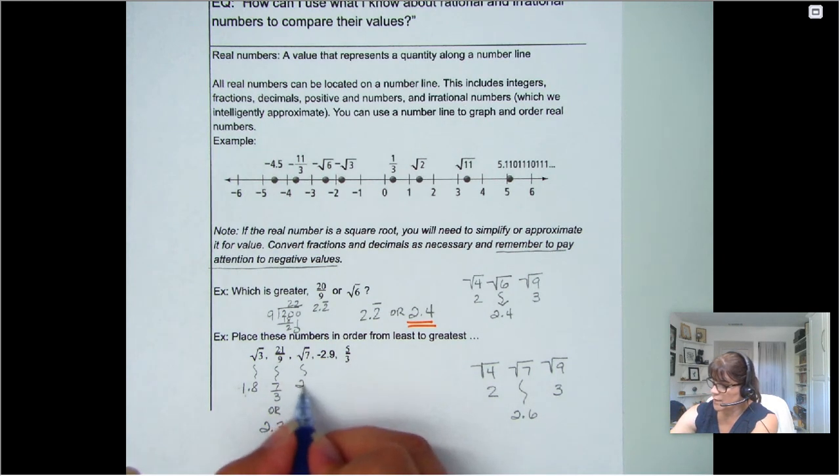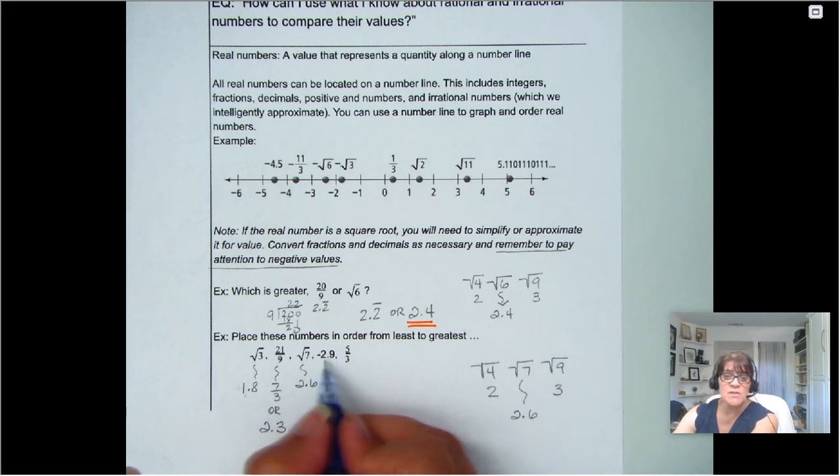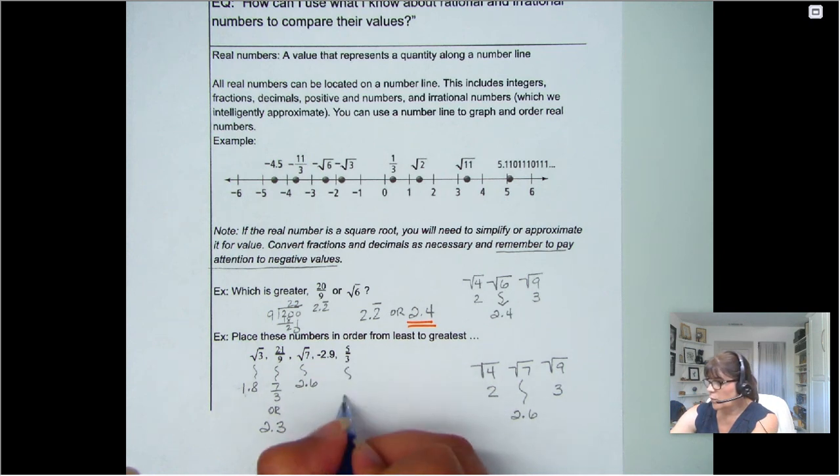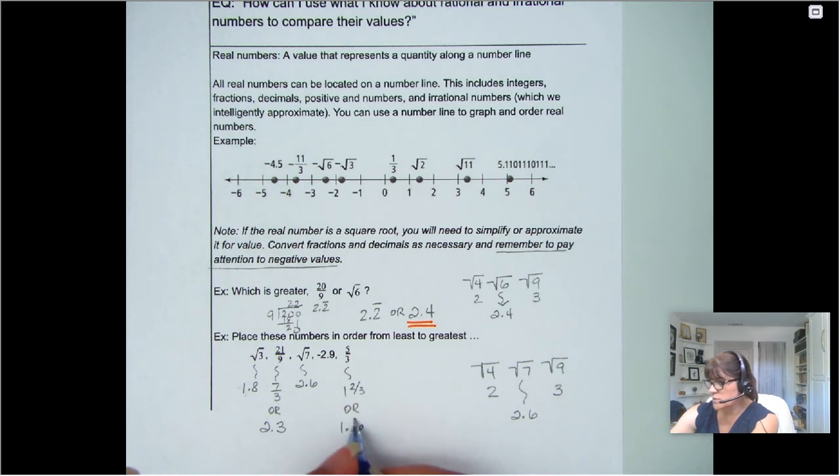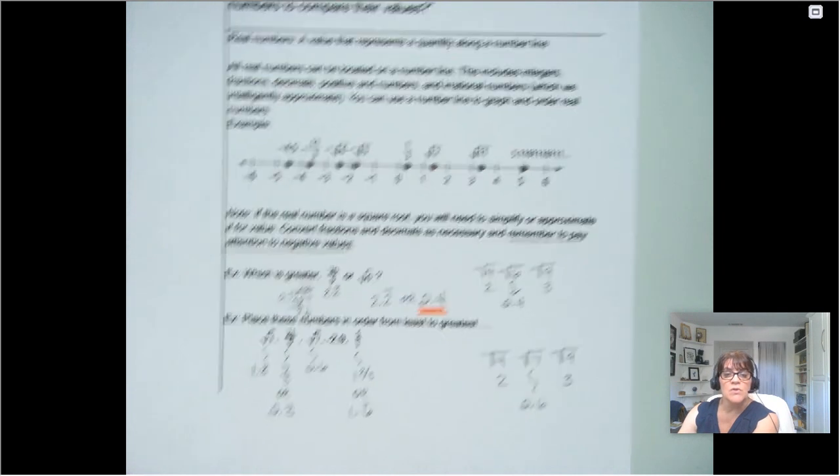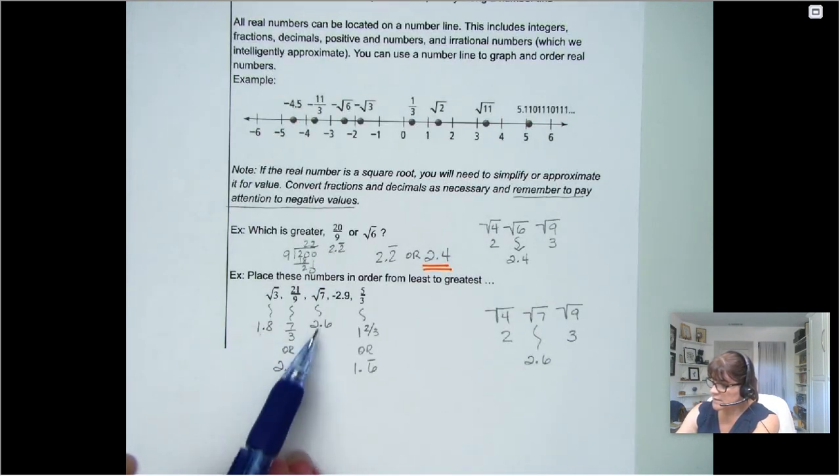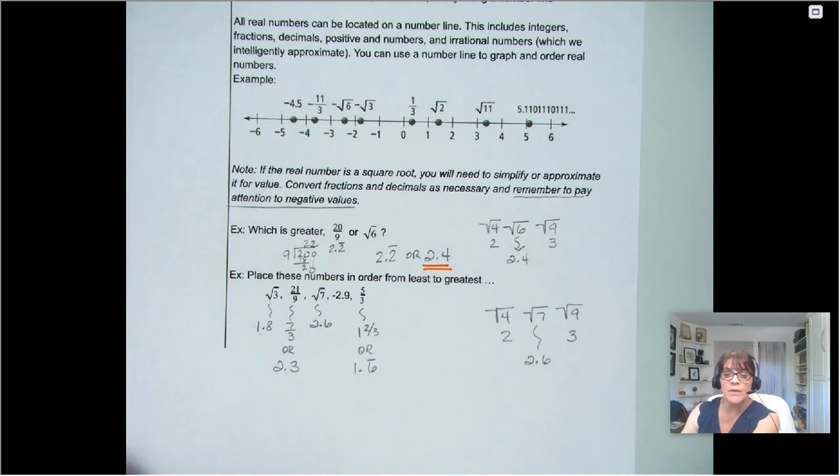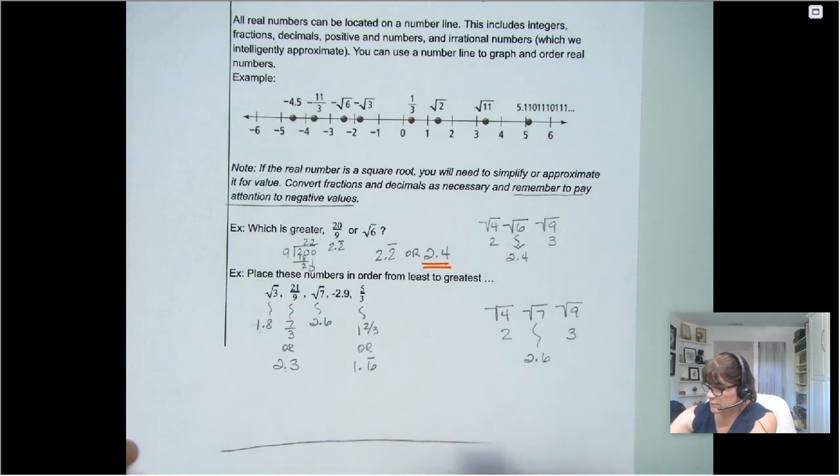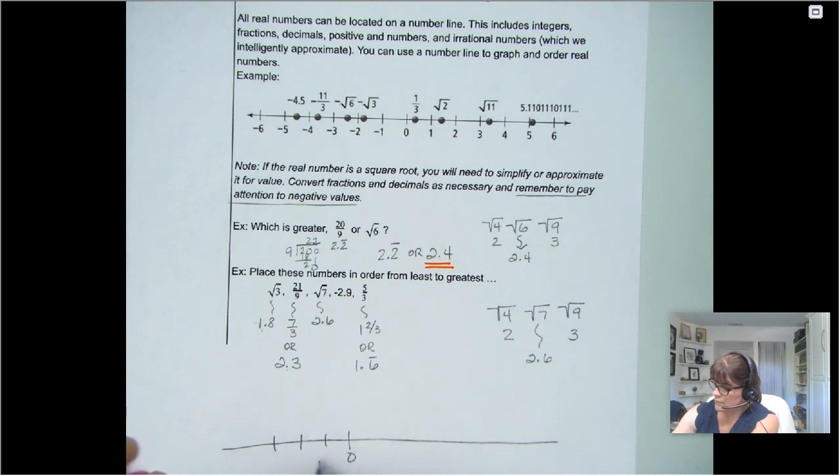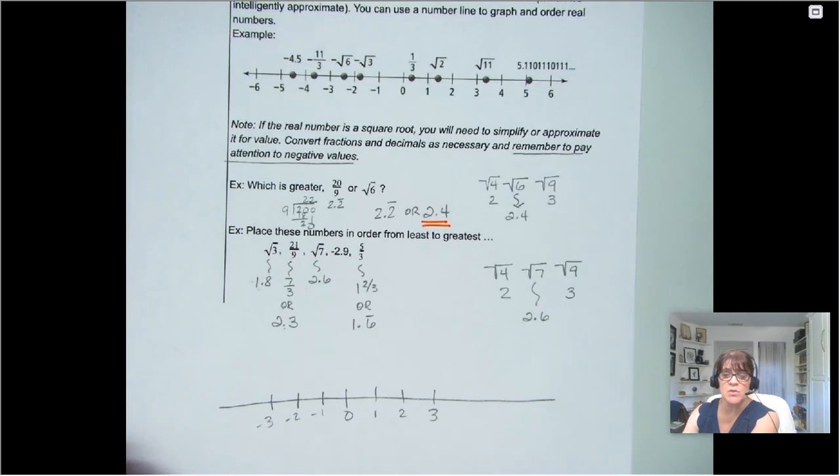2.6. Negative 2.9 is already in a decimal form. 5 thirds. Well, that would be 1 and 2 thirds or 1.6 repeating. So now for each one of these, I have a decimal value that I can put in order. Now I could use a number line. I'll put zero here. 1, 2, 3. 1, 2, 3. The really great thing about a number line is sometimes it just helps you organize them.